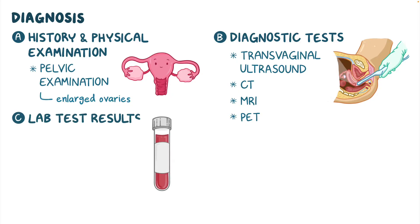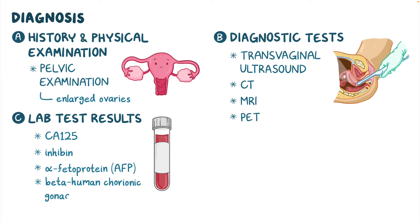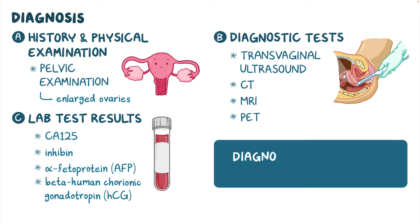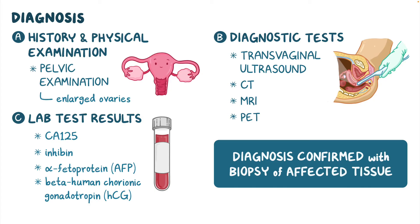Laboratory tests may also be ordered and may include CA-125, inhibin, alpha-fetoprotein (AFP), and beta-human chorionic gonadotropin (HCG). Finally, diagnosis is confirmed with a biopsy of affected tissue, which is usually performed after the tumor is removed or during exploratory laparotomy.